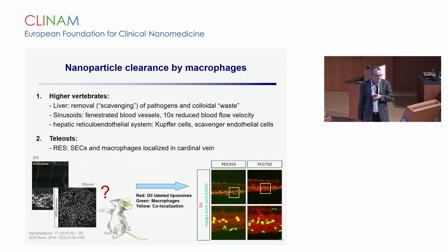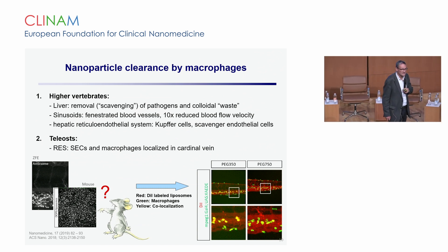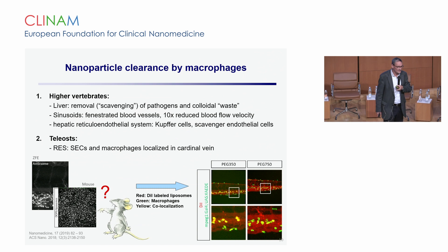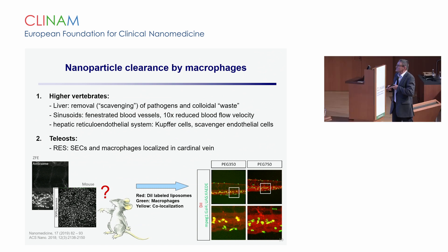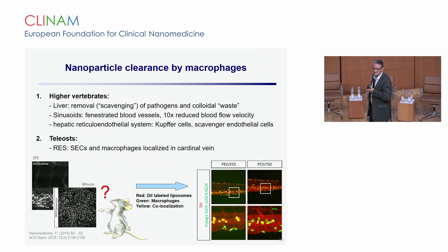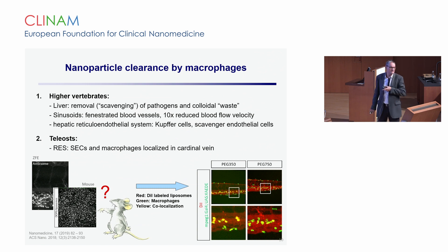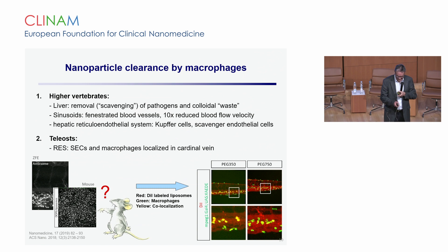We used a transgenic fish line expressing GFP in the macrophages. Two types of DII-labelled red liposomal formulations were intravenously injected: liposomes decorated with PEG-350 providing incomplete steric stabilization, and their counterpart with full steric stabilization. The partially PEGylated liposomes with the short PEG chain accumulate in the macrophages, showing very nice co-localization. In contrast, the fully sterically stabilized liposomes have a long half-life in circulation and escape phagocytosis by the macrophages.